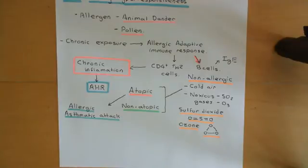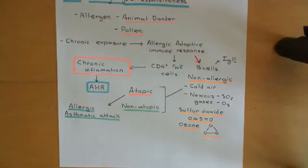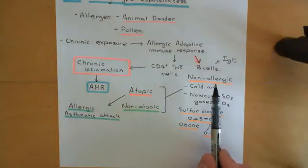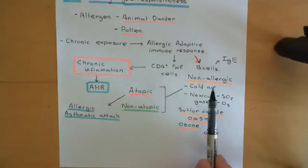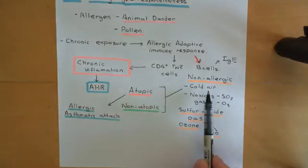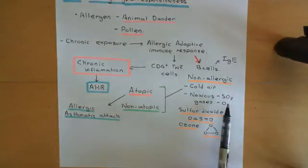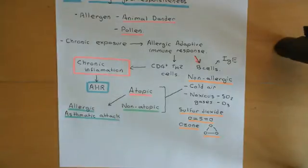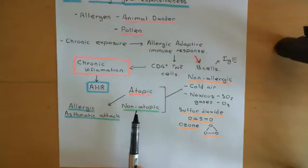It triggers changes to the airway that mean the airway will respond by bronchoconstriction to stimuli that it never should have in the first place. This causes the non-allergic asthmatic attacks — when you breathe in things like cold air or noxious gases such as sulfur dioxide and ozone, they will trigger non-allergic asthmatic attacks in people who have this airway hyper-responsiveness. That's common to both atopic and non-atopic asthma.